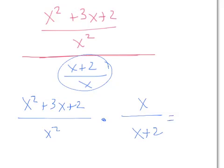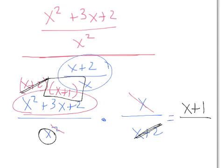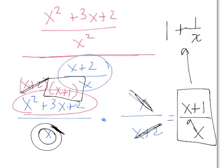We can factor the numerator x squared plus 3x plus 2 into x plus 2 times x plus 1. The x plus 2 in the numerator cancels with the x plus 2 in the denominator. There's x squared in the denominator, so one x cancels with the x from the reciprocal, leaving behind one x. The final result is x plus 1 over x. You could also write this as 1 plus 1 over x, by dividing x into both terms.